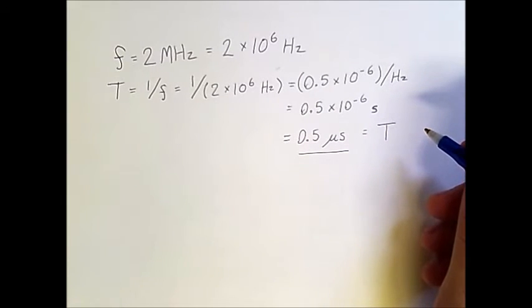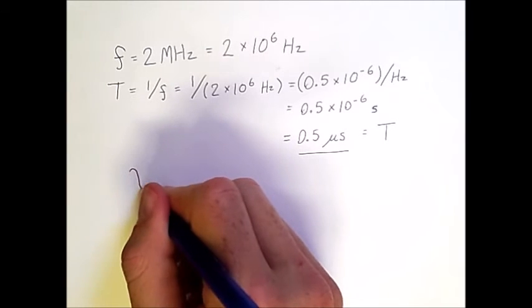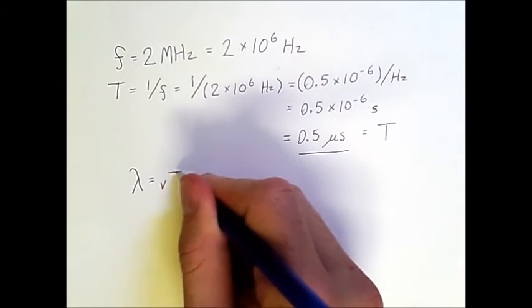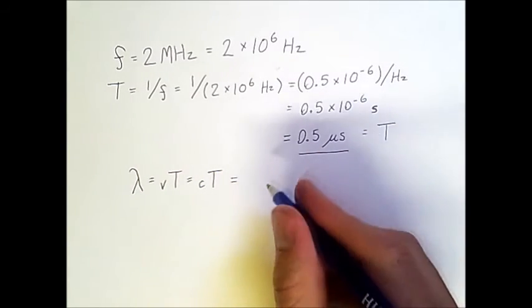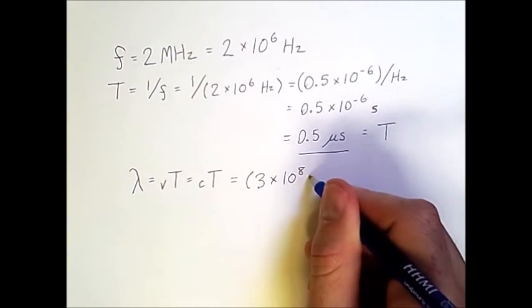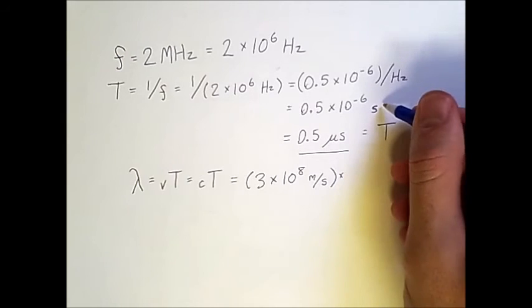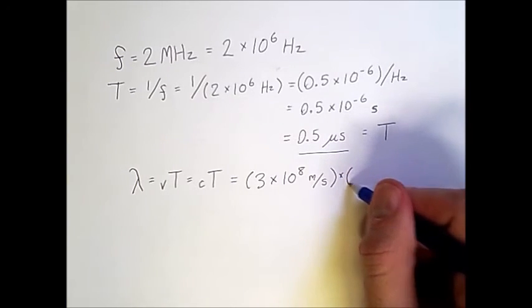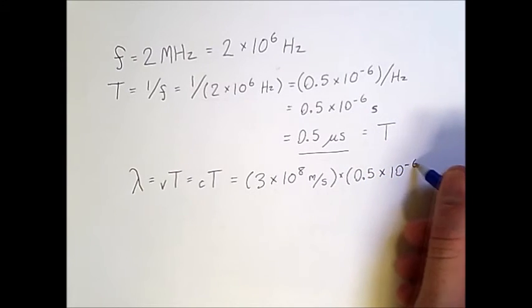and using that, we can determine the wavelength if the wave is traveling at the speed of light, which it would if it were being transmitted through the air. So the wavelength is V times T, which in our case is C times T, which we are approximating as 3 times 10 to the 8 meters per second. And T, and I'll go back to our original calculation in seconds, is 0.5 times 10 to the negative 6 seconds.